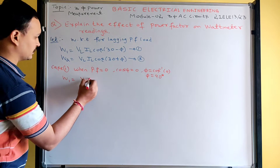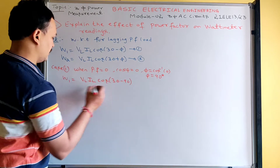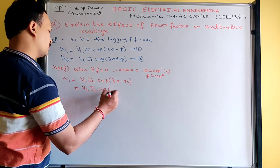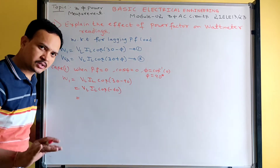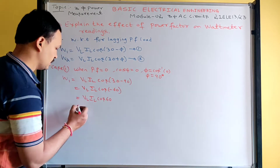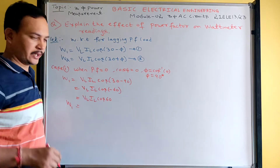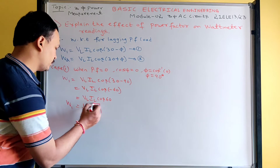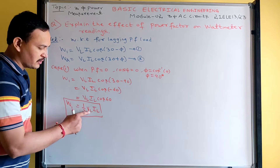Substituting φ = 90° into equation 1 and 2: W1 = VL·IL·cos(30° − 90°) = VL·IL·cos(−60°). Since cos(−θ) = cos θ, this becomes VL·IL·cos 60°. cos 60° = 1/2, so W1 = (1/2)·VL·IL. When power factor is 0, W1 shows half of VL·IL.